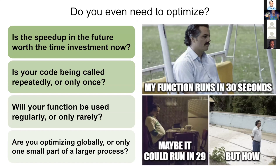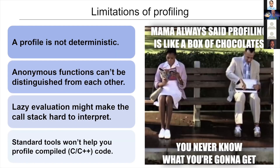Questions you should ask yourself: do you even need to optimize? If you've run a profile and broken a function down, that's the time to stop and decide whether there's any point in making it faster. If the function is being called once and you think you can shave off 30 seconds out of a two-hour process, it doesn't really need to be optimized. But if you have a very slow function being called over and over again, that's when you need to start thinking about optimization. Optimization takes time — it's an investment, so you have to decide if it's worth it.